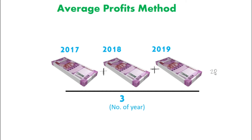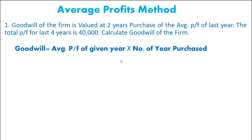You get 2,000 rupees as the profit average. This is the average profit. The average value is used to determine the value of the firm based on year purchase. You can use 2 years purchase, and the average profit of the firm is used to calculate the goodwill value.